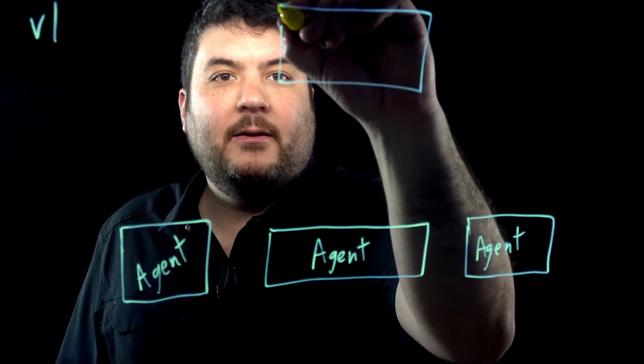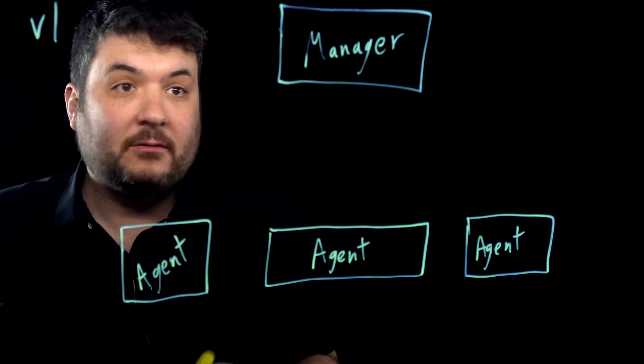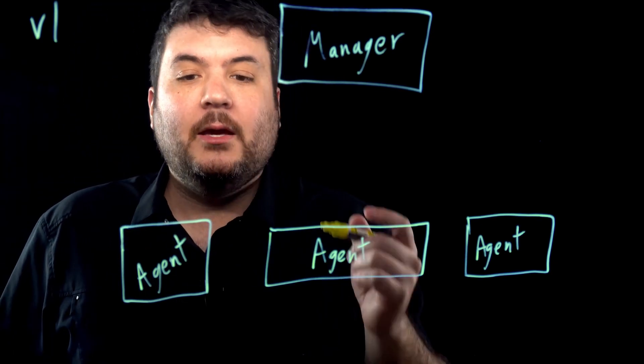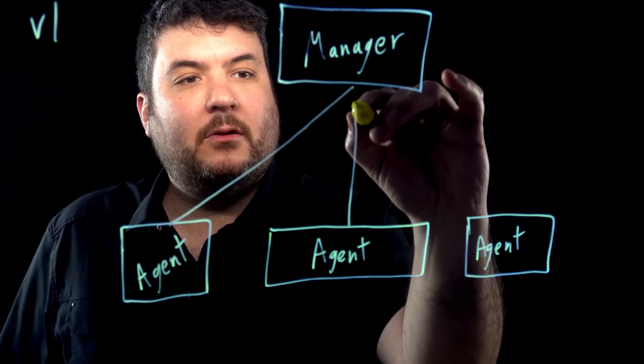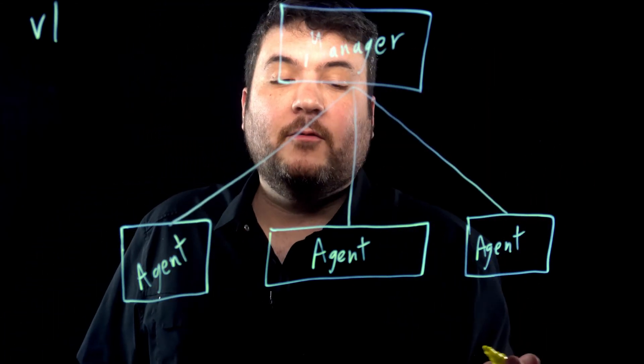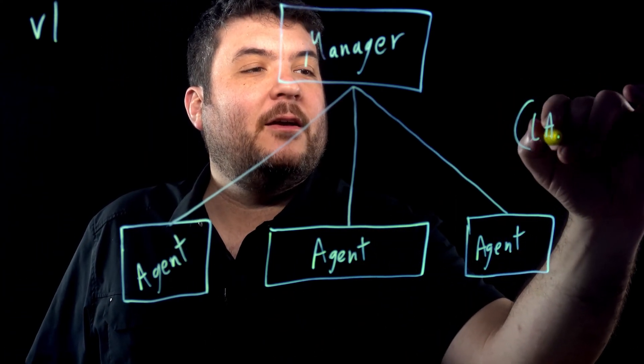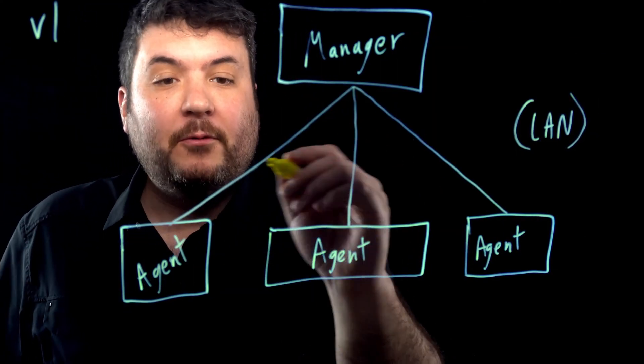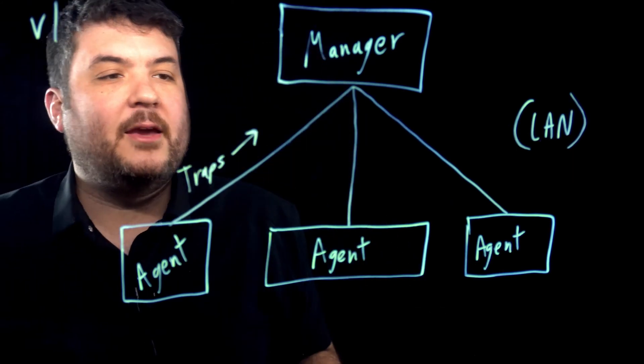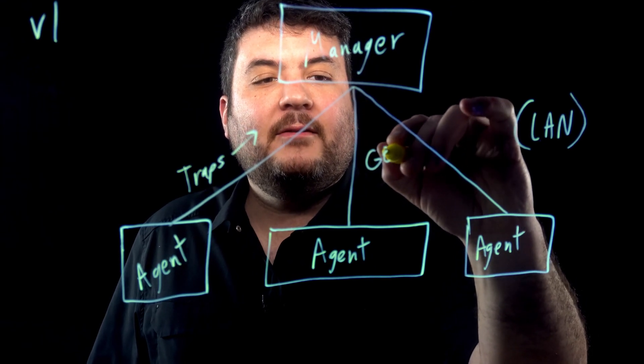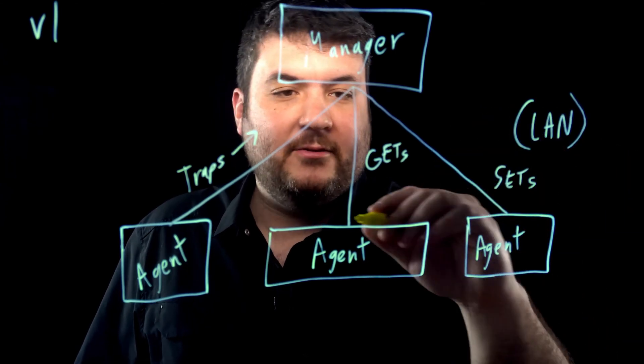And then we have to have some kind of a central manager. This can be a piece of software, could be a dedicated server, could be a device that does other things and is also an SNMP manager. And what you're going to do is have communication going back and forth between these devices. This is over LAN. And you have messages going up which are called traps. These are asynchronous messages sent by the agents. And then you also have things like gets and also sets.